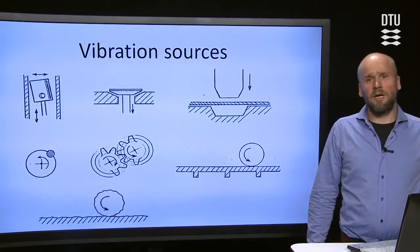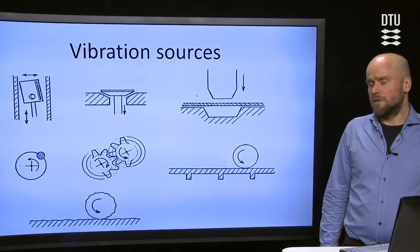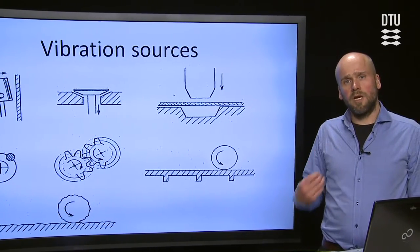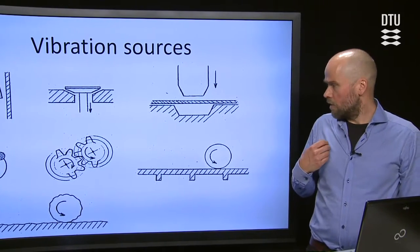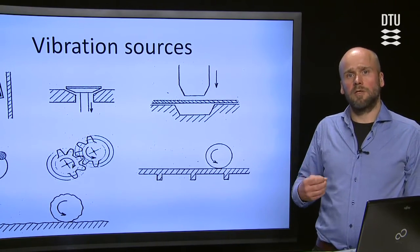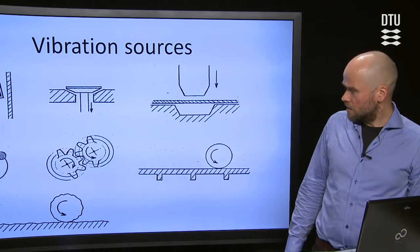The third kind is random sources. This can be a wheel moving over a roughness and then the interaction here will cause a stochastic signal.